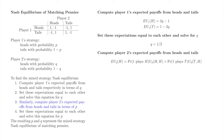When player 2 plays heads, the possible outcomes are heads-heads, which occurs when player 1 plays heads, and tails-heads, which occurs when player 1 plays tails. The probability of heads-heads is equal to the probability of player 1 playing heads, and the probability of tails-heads is equal to the probability of player 1 playing tails. The probability that player 1 plays heads is p, and when that outcome occurs player 2 receives minus 1. The probability that player 1 plays tails is 1 minus p, and when that outcome occurs player 2 receives 1. Player 2's expected payoff when playing heads is 1 minus 2p.